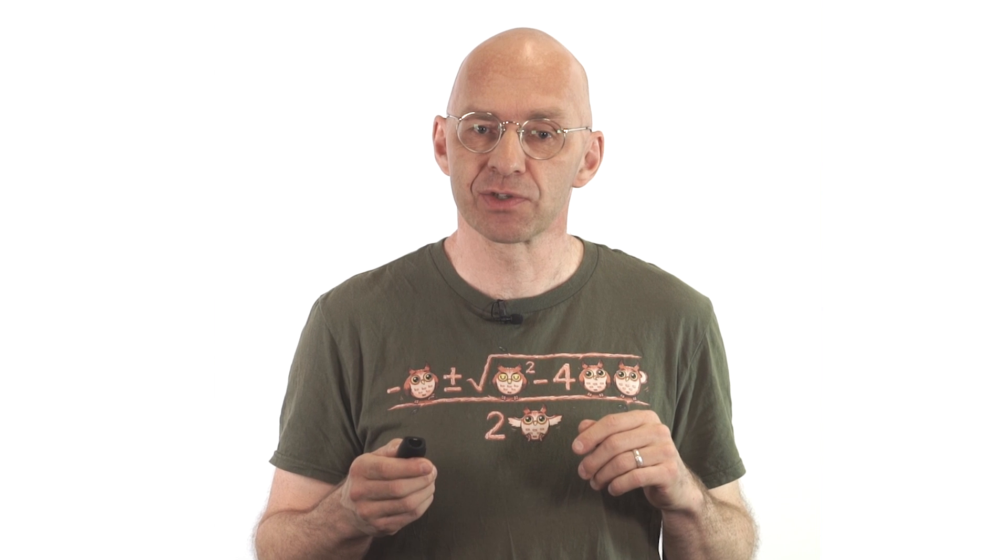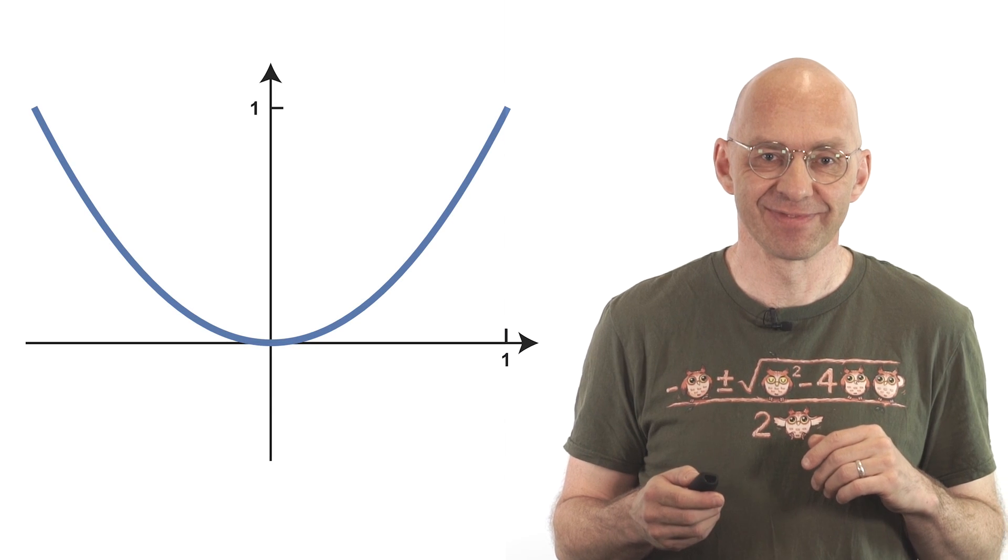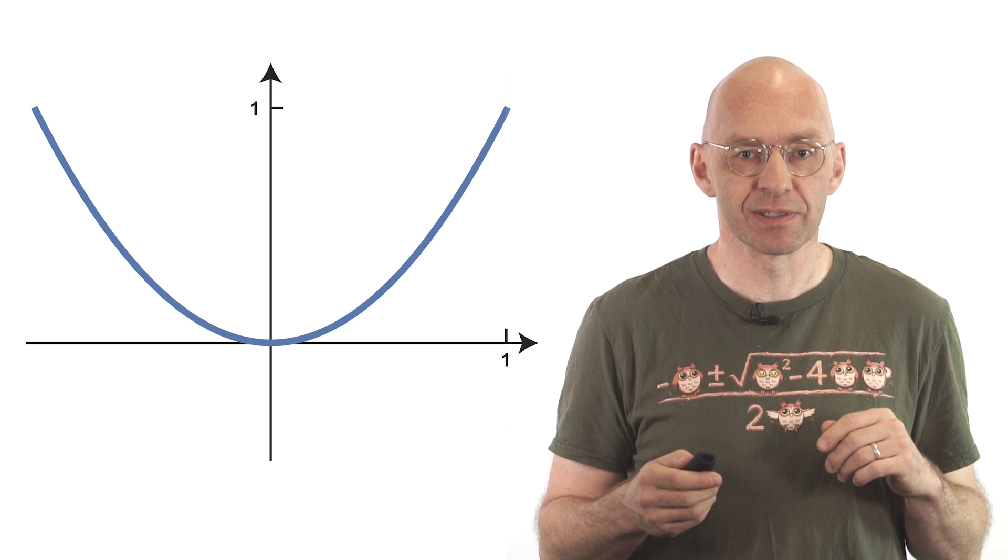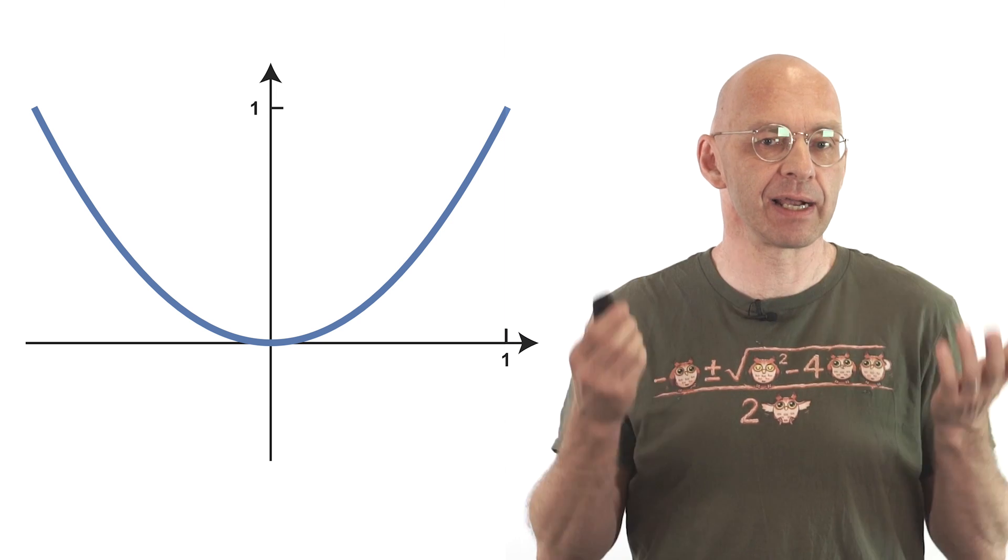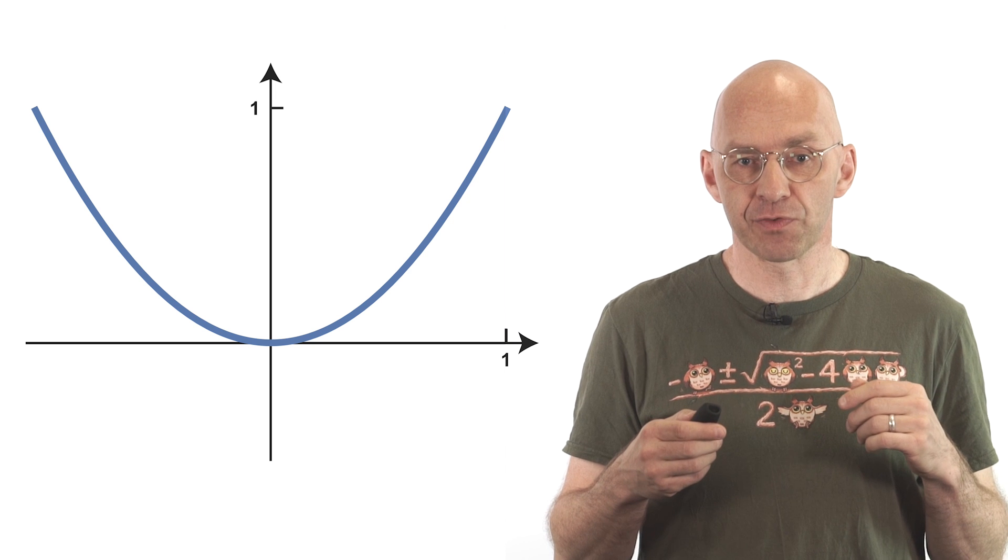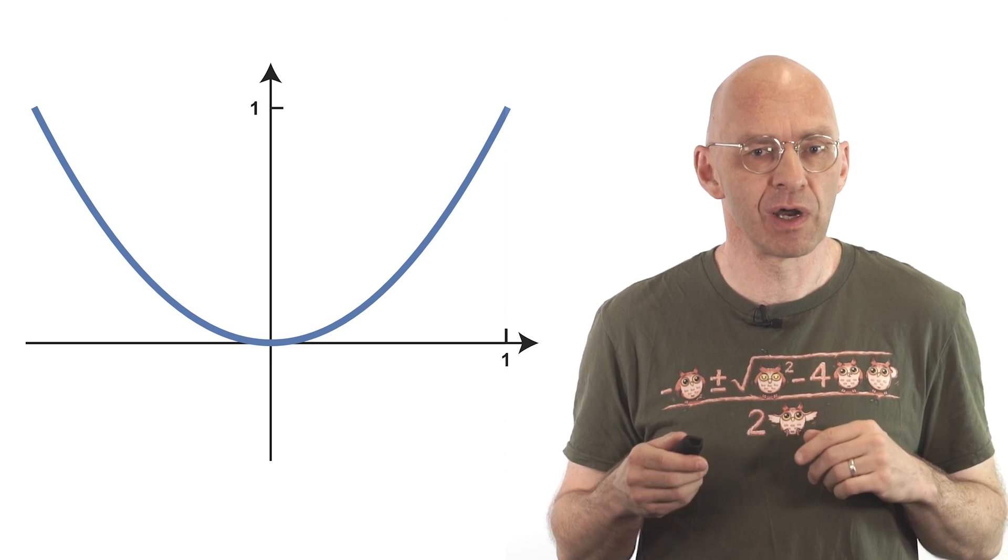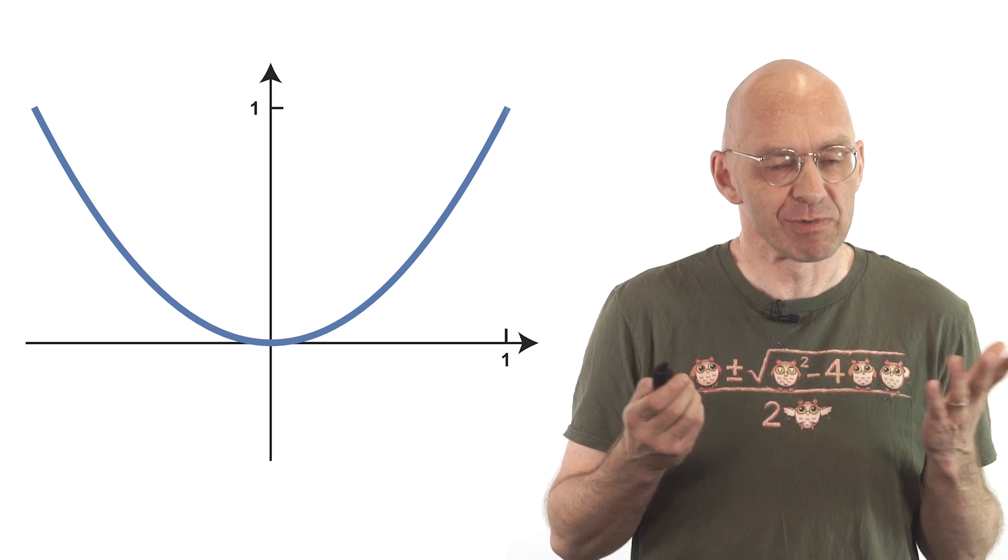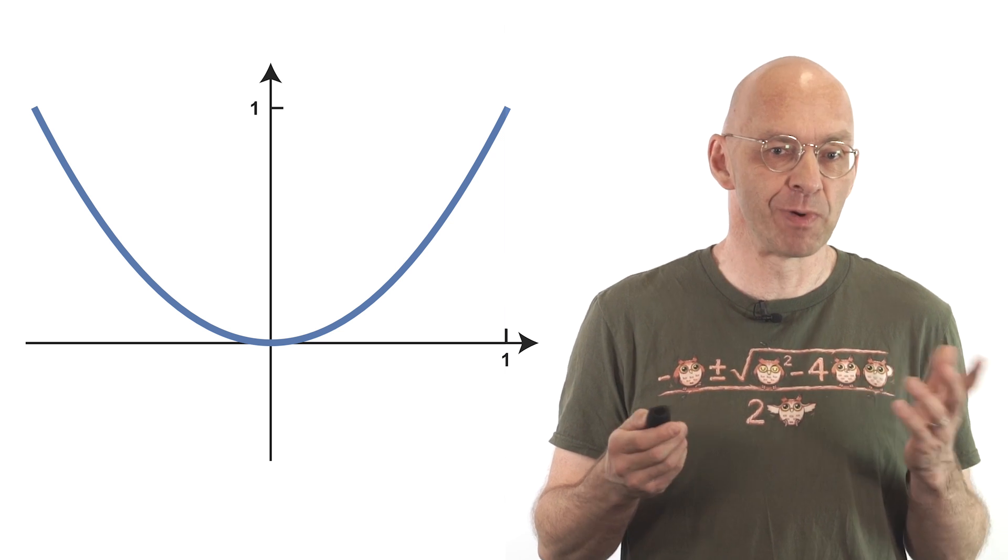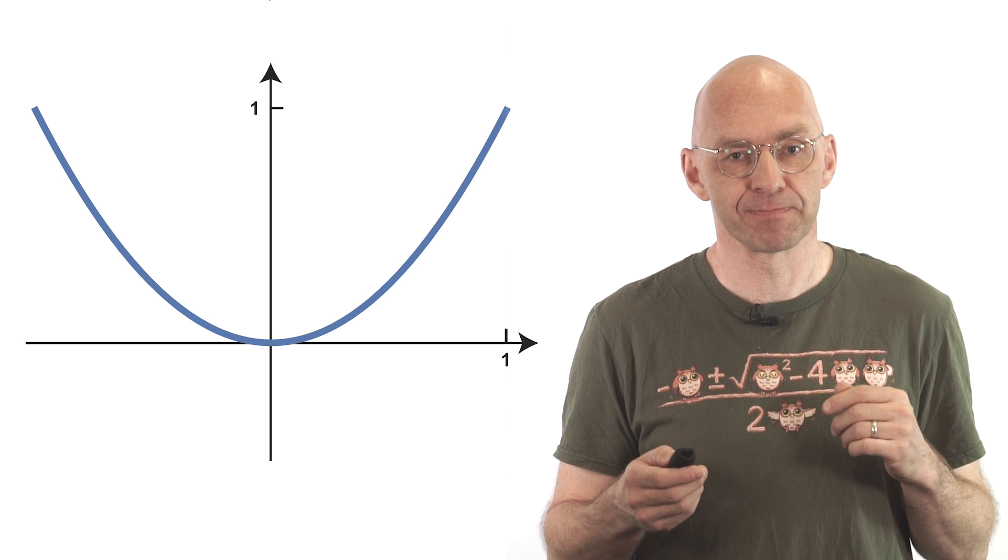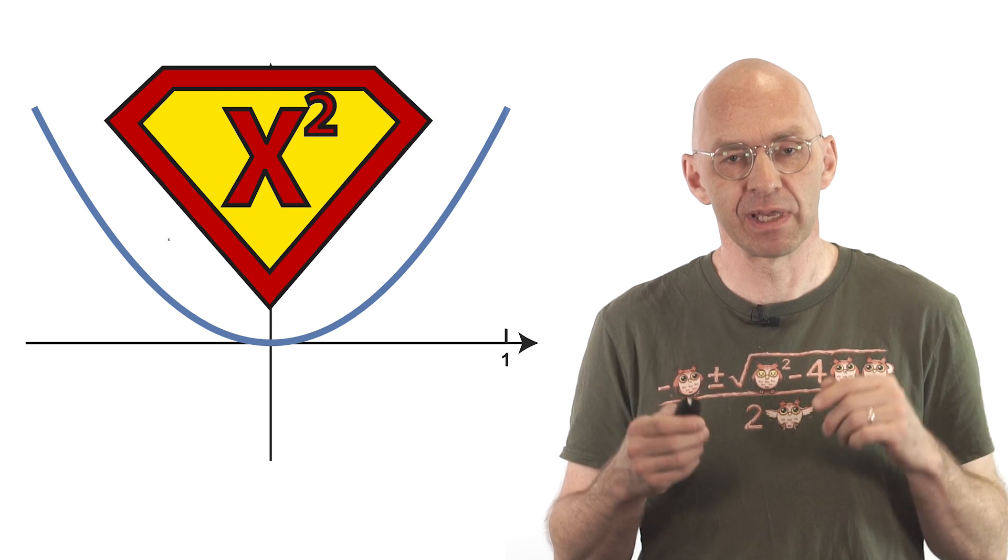It's all got to do with our high school friend good old x squared. Sticking with movie references x squared is a little bit like Clark Kent. Most of Clark's friends think they know all there is to know about him but only a select few are aware that he's actually Superman. Same with x squared which also has some hidden superpowers that hardly anybody knows about. Okay, here we go.